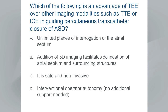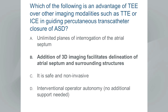Audience poll: which of the following is an advantage of transesophageal echo over other imaging modalities in guiding percutaneous transcatheter closure of ASD? Choice A: unlimited planes of interrogation; Choice B: addition of 3D imaging facilitating delineation of the atrial septum and surrounding structures; Choice C: it's safe and non-invasive; or Choice D: interventional operator autonomy. The correct answer is Choice B — the addition of 3D imaging facilitates delineation of the atrial septum and surrounding structures.